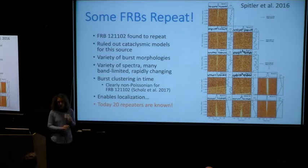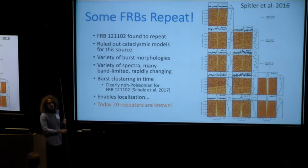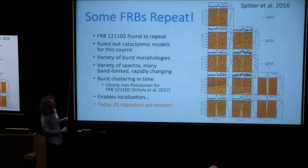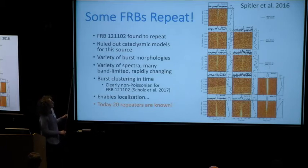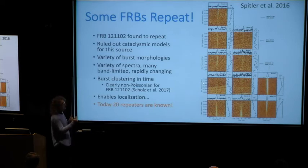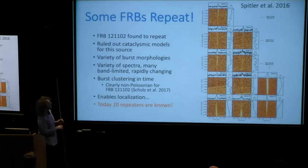Some FRBs do repeat. Unlike the Lorimer burst, which nobody has ever seen again, some of them repeat. The first repeating FRB was 121102, about which the very next talk by Laura Spittler will be focused. The second repeater is interesting because it immediately constrains models — it rules out cataclysmic models for this kind of source.